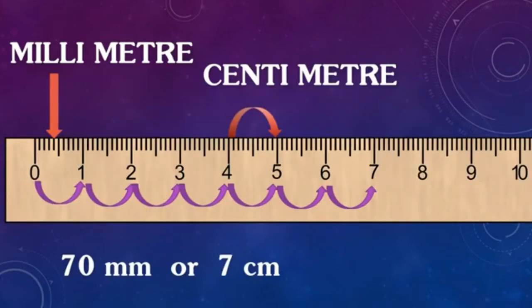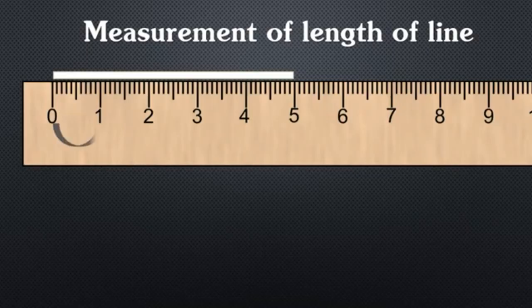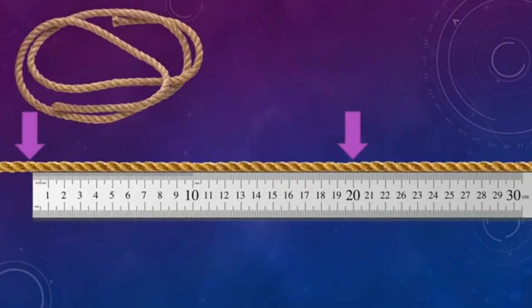So what is the distance between 0 and 7? It is 7 centimeters or 70 millimeters. The scale shown has two measuring units — inch and centimeter. We have discussed centimeter and millimeter, now let's discuss inch. 1 inch equals 2.54 centimeters and 1 foot equals 12 inches. For example, the distance of the white line shown is 1, 2, 3, 4, 5 — it is 5 centimeters long.